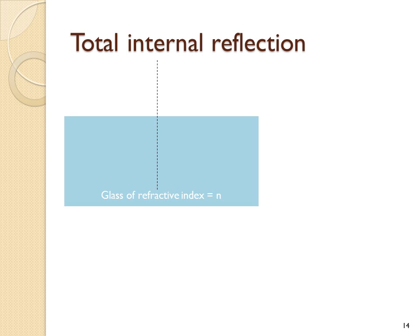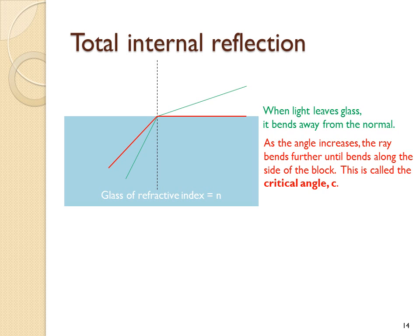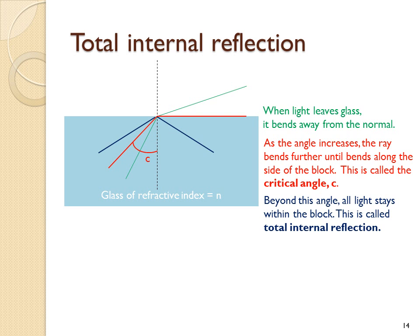Let's consider what happens to light when it tries to leave glass or a more optically dense material. If it travels at a fairly shallow angle, it will refract and leave the glass, bending away from the normal. If you increase the angle of incidence at this surface, eventually the light will graze along the glass surface edge at an angle called the critical angle. Beyond the critical angle, light has nowhere left to refract, and so it reflects inside the block. All of the light energy reflects. This is called total internal reflection.